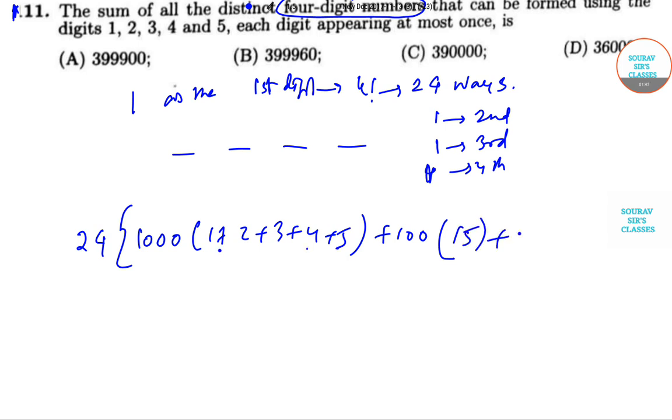This is 15 for the third and last one is 15. We multiply to get the sum: 15 is common and this gives us 1111. The answer is coming as 399960. So option B is correct.